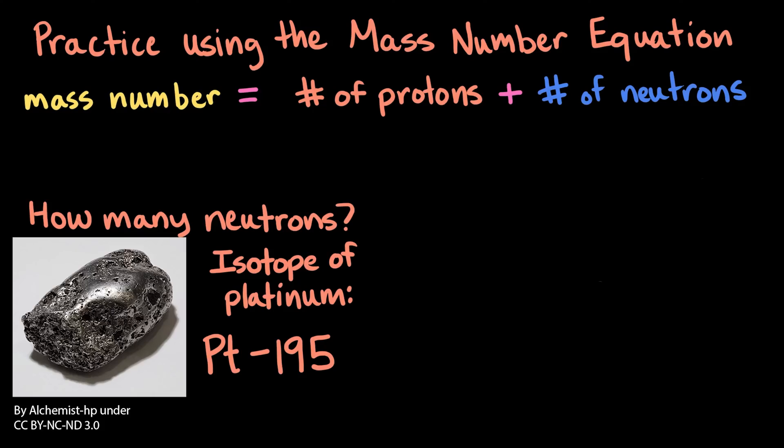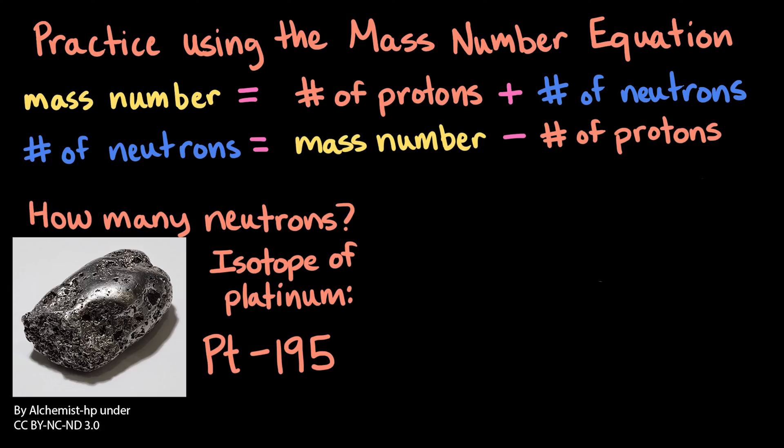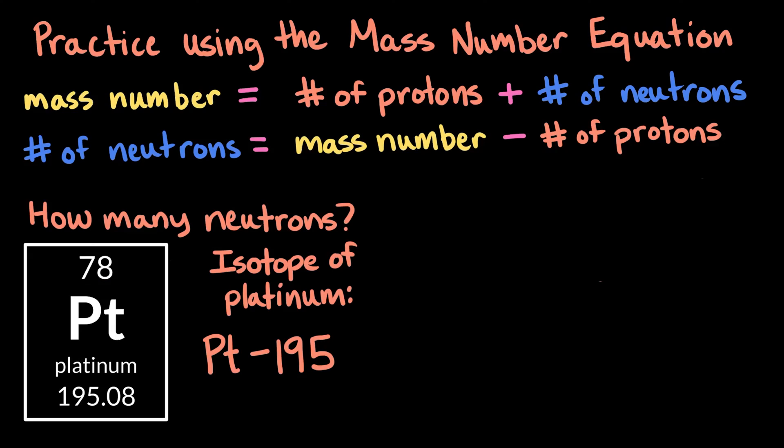Again, we'll need to use the rearranged mass number equation to solve for the number of neutrons. This particular notation provides the chemical symbol of platinum and its mass number. We can look up platinum on the periodic table to find its atomic number, which is 78.